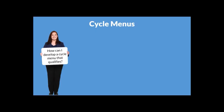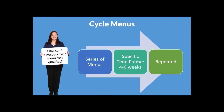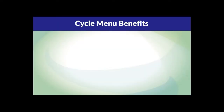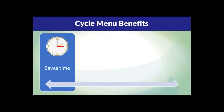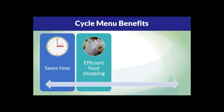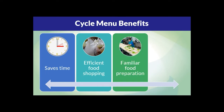The next question we received is: how can I develop a cycle menu that qualifies? A cycle menu is a series of menus planned in advance, served for a specific time period, usually four to six weeks, and then repeated. Cycle menus are recommended because they save programs time and money by planning a set of menus once and then repeating them, preventing the need to spend time creating new menus every week or every month. It also helps make food shopping more efficient with repeat grocery or vendor orders, which helps with predicting food costs and possibly saving money.